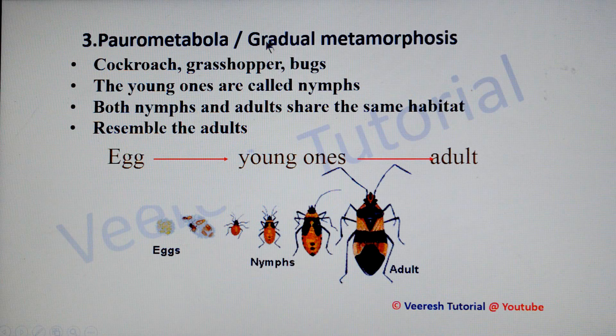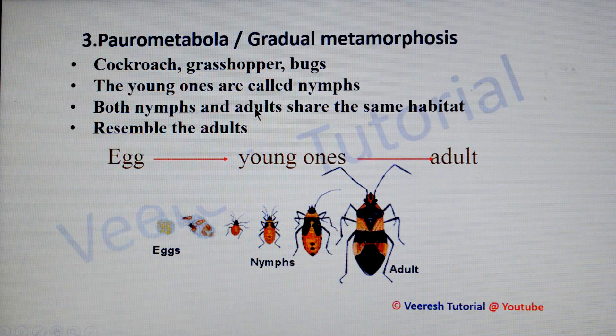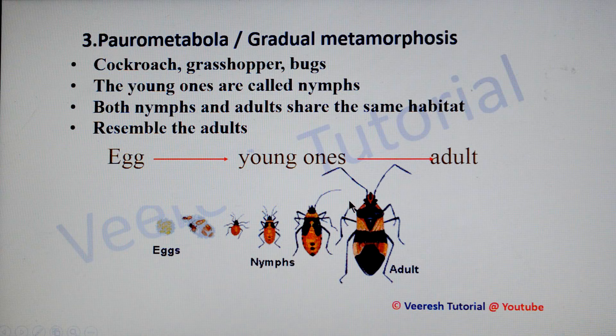The third one is parametabola, also called as gradual metamorphosis, present in cockroach, grasshoppers, praying mantids, and bugs. The young ones are called as nymphs and they are terrestrial in nature. Both nymphs and adults share the same habitat. The nymphs resemble the adults in general body form except for wing and genitalia development. Three stages are present in its life cycle.